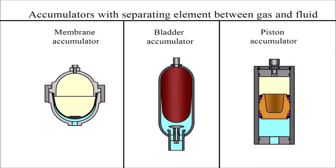The following types of accumulators with separating elements are used in industries: piston, membrane, balloon or bladder accumulators. They differ in the way gas and liquid are separated.